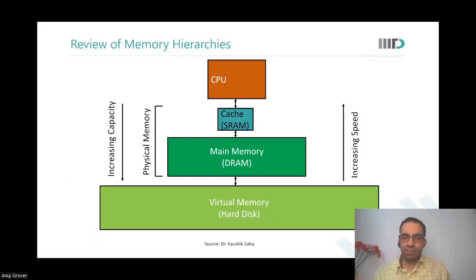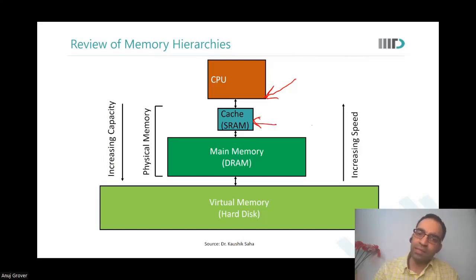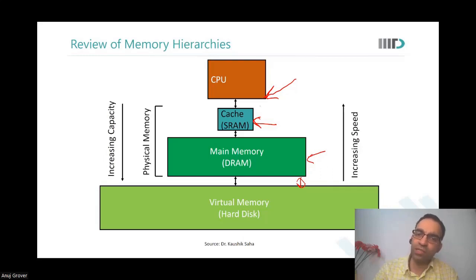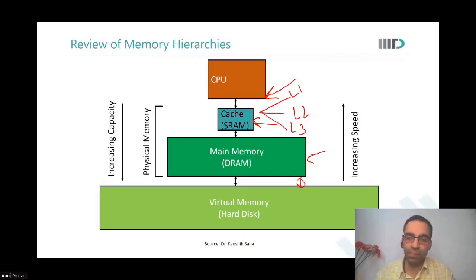In a typical memory system, there is a CPU, then there is a cache — typically an SRAM — associated with it. The SRAM interacts with what we call DRAM, which then interacts with the hard disk. As you move from hard disk to caches, speed increases. Caches can also be L1, L2, L3 — L1 is level one, closest to the processor; L3 is closer to the main memory, the DRAM.